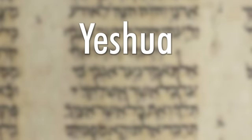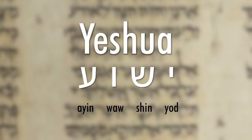Yeshua is spelled with four letters in Hebrew and Aramaic: Yod, Shin, Vav, and Ayin — read from right to left and without vowels. That final letter Ayin is not actually an equivalent to the English vowel A, but rather a guttural letter, one of several in the Hebrew and Aramaic alphabet. Ayin is created in the back of the throat, and this affected the pronunciation of the name.